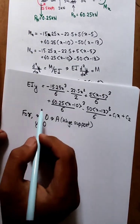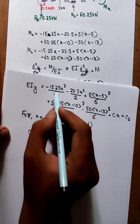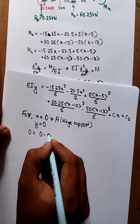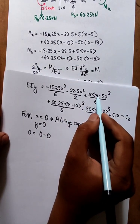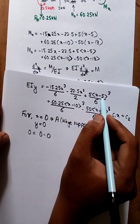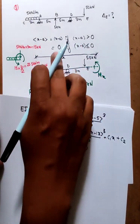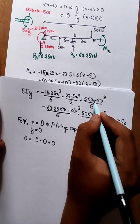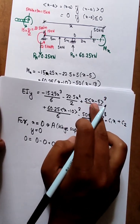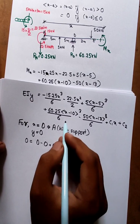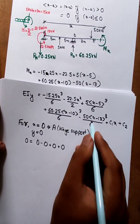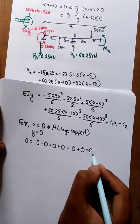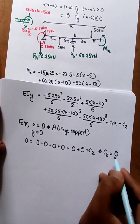At x equals 0, y equals 0. When x equals 0 minus 5, it is a negative value, so it equals 0. Applying these boundary conditions gives us C2 equals 0.